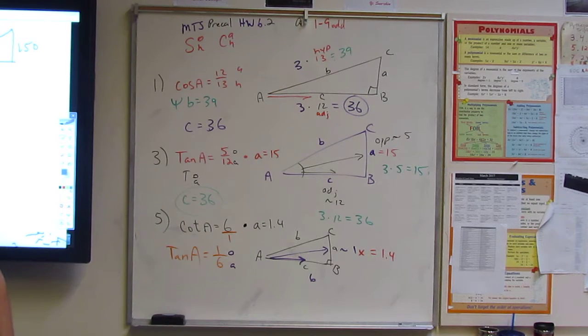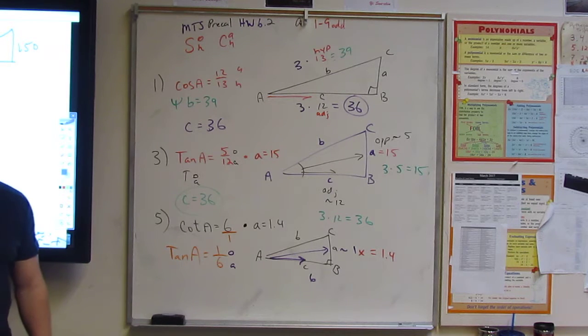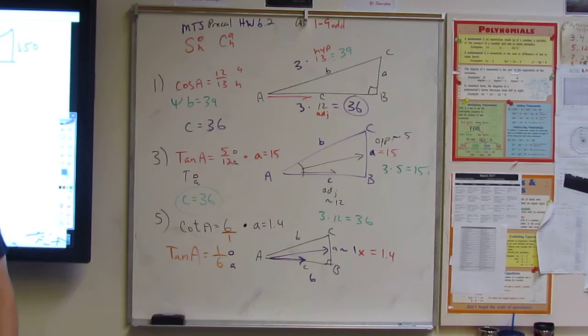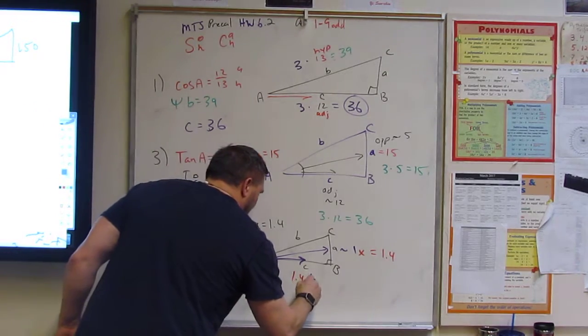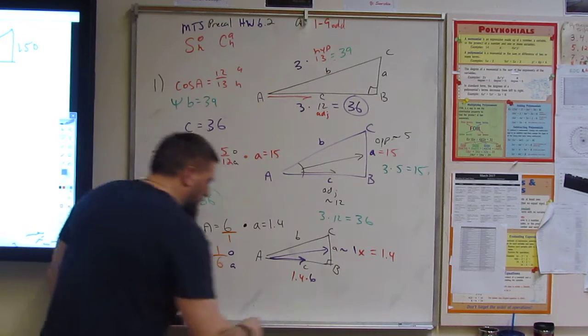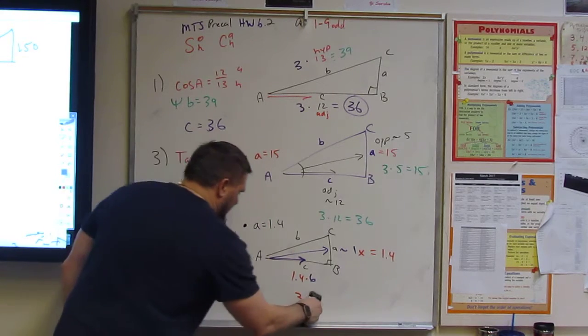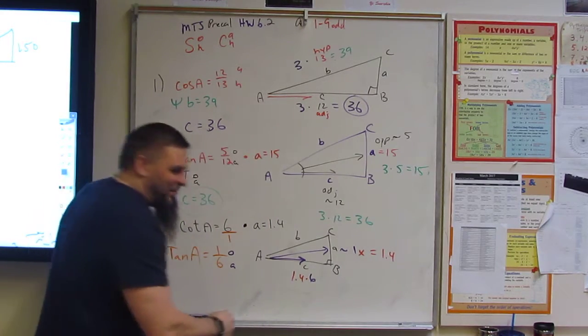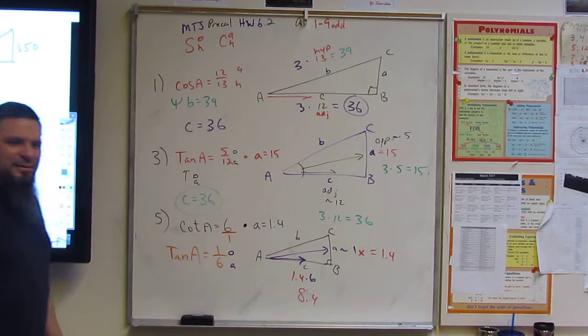So, they're saying that this is really going to be, so, 1 times X is 1.4. Right? 1 times something is 1.4. Do we know what that something is? This one is actually kind of easy. This one's kind of easy, because it's just going to be 1.4, right? So, then, what's 1.4 times 6? So, in this case, 6 plus 2.4, right? Which is 8.4?